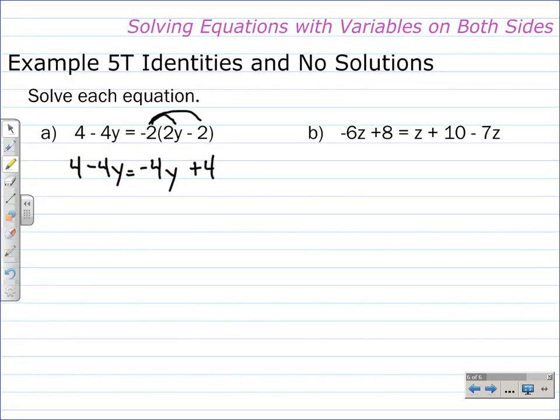Next step is to eliminate the y's, so we add 4y to both sides. And what happens is the y's completely cancel, leaving us with this equation: 4 is equal to 4.